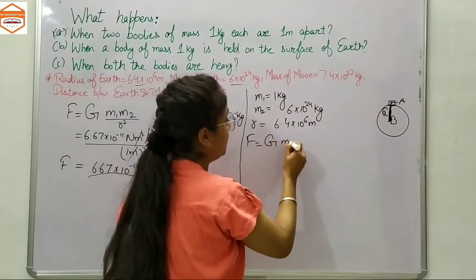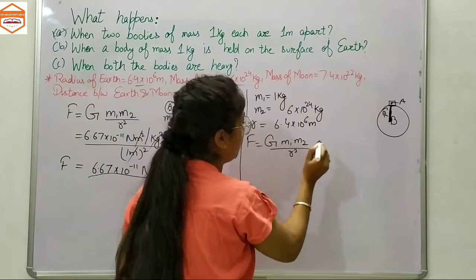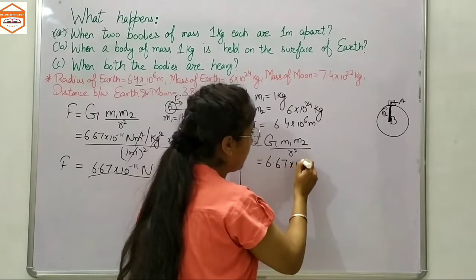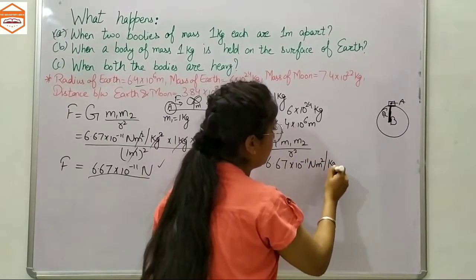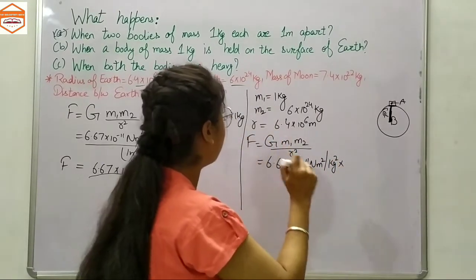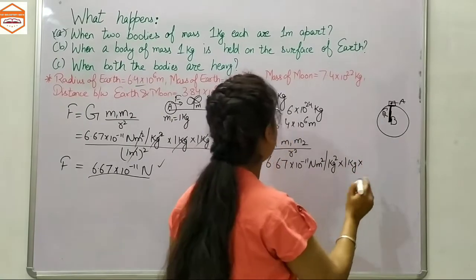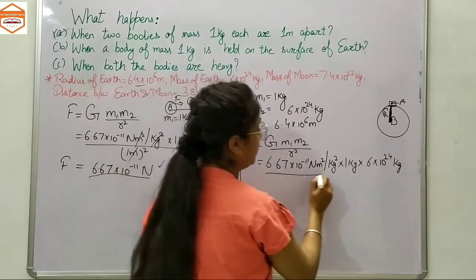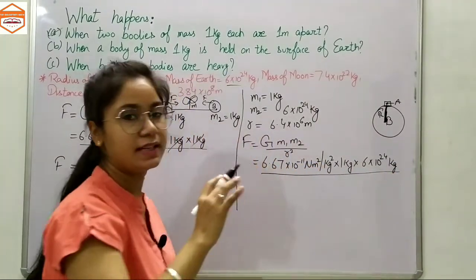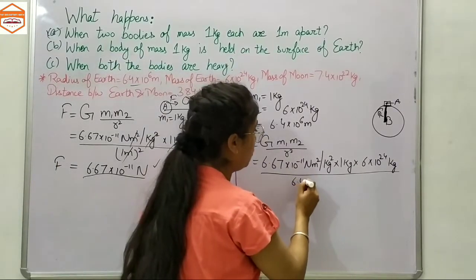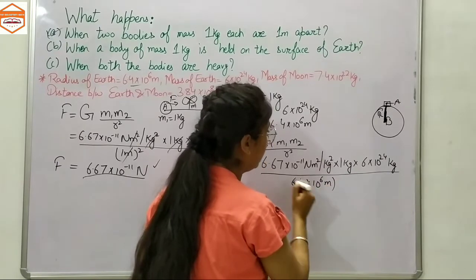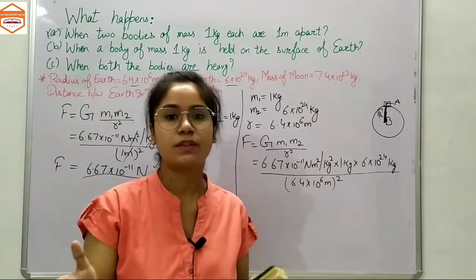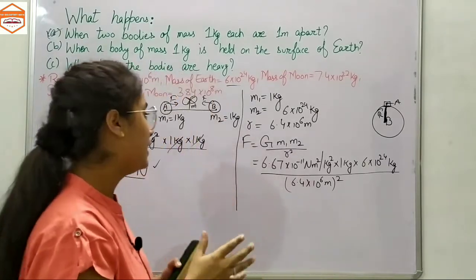We apply the same formula: F = G·M₁·M₂ / r². G = 6.67 × 10⁻¹¹ N·m²/kg², M₁ = 1 kilogram, M₂ = 6 × 10²⁴ kilograms, and r = 6.4 × 10⁶ meters squared.